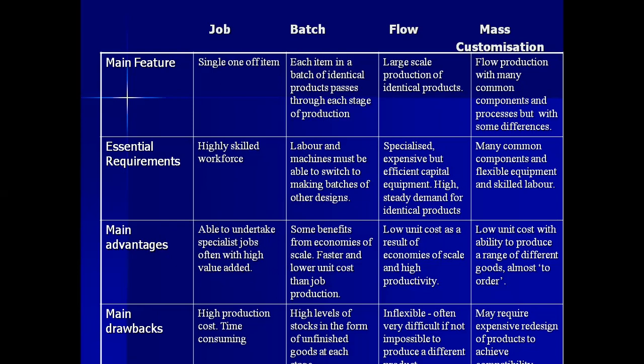A main drawback of job production is high production cost, and it is time-consuming. Job production is labor intensive, and labor is expensive — you have to pay salaries and wages every month. It is also time-consuming because labor requires rest time; workers cannot work 24 hours a day as machines can. So it is slower and costlier due to the greater amount of workforce involved.